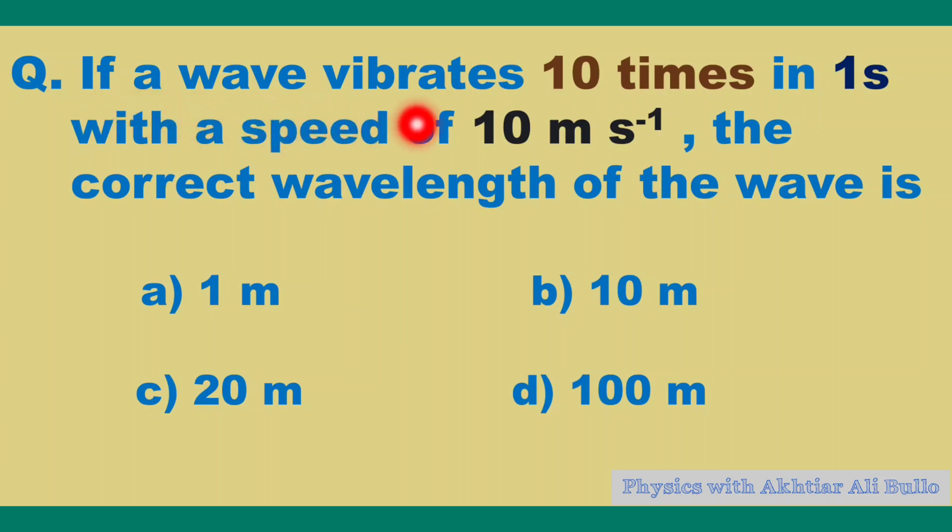If a wave vibrates 10 times in 1 second with a speed of 10 meters per second, the correct wavelength of the wave is: a) 1 meter, b) 10 meters, c) 20 meters, or d) 100 meters.